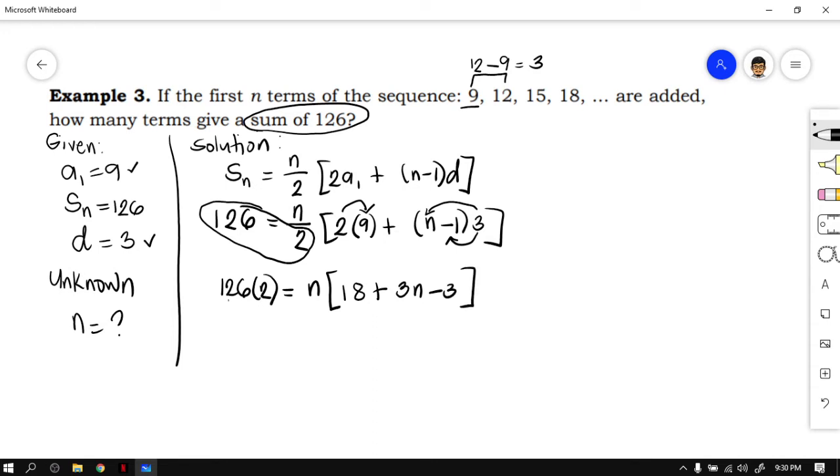Next, 126 times 2 is 252. So 252 is equal to n times, and you have to combine 18 and negative 3. 18 minus 3, that is 15, plus 3n. Continuing the process, 252 is equal to 15n plus 3n squared.